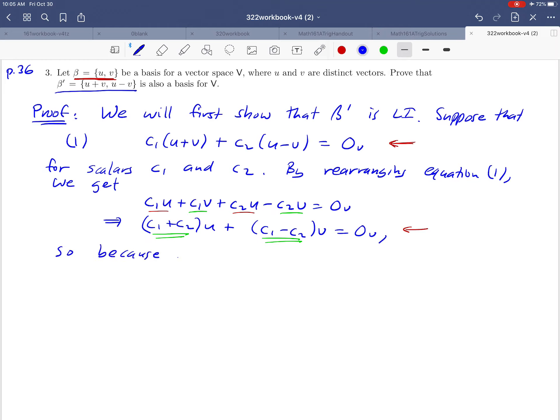Because β is linearly independent, we must have c₁ + c₂ = 0 and c₁ - c₂ = 0. Equation (2) is really two equations—it's a system of equations where both c₁ + c₂ and c₁ - c₂ have to be zero.